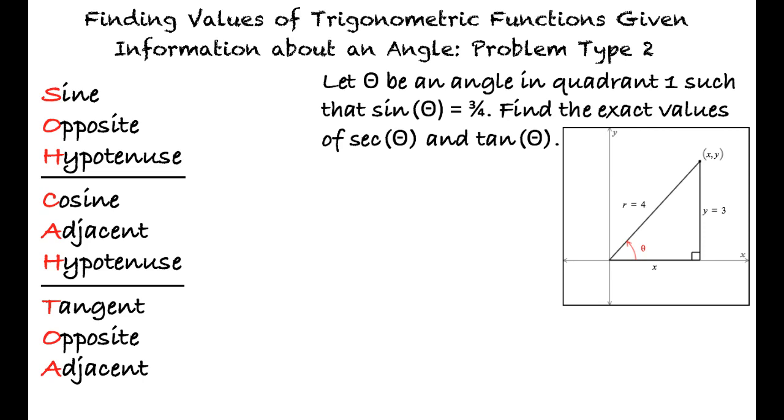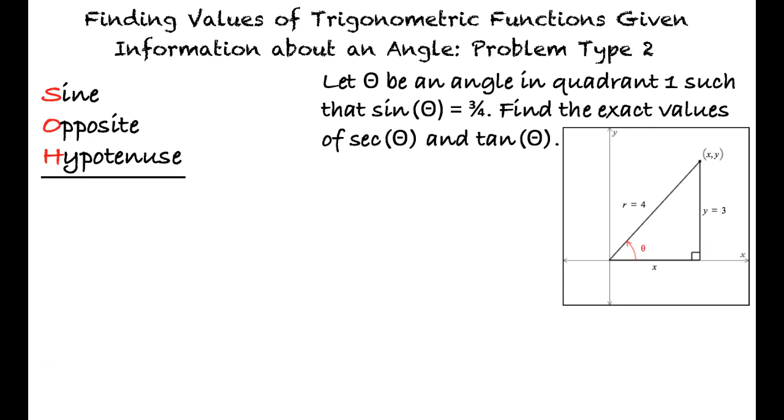We can start by recalling that the sine of theta is equal to the opposite over the hypotenuse. Thus, the opposite side is 3 and the hypotenuse is 4.